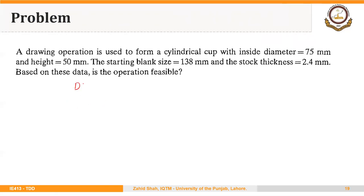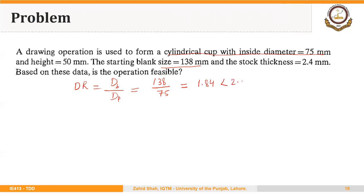The drawing ratio equals the diameter of the blank divided by the diameter of the punch. The blank diameter is 138 mm, and the punch diameter — which is the inside diameter of the cylindrical cup — is 75 mm. So the drawing ratio equals 138 divided by 75, which is equal to 1.84. That is obviously less than 2.0.